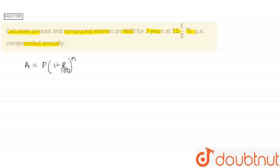And we know the formula for compound interest is amount minus principal. So let's first find the amount. Here the principal is given as 9600, and the time N is given as 3 years.